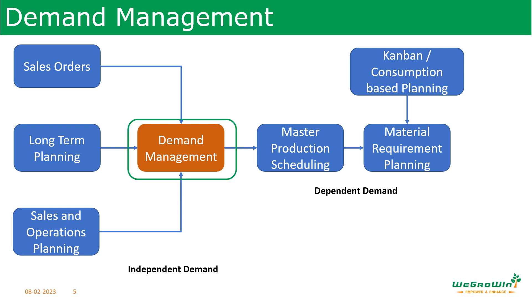Handling independent demand and dependent demand together is called demand management. As a purchasing person, you must be clear on what is independent demand and dependent demand. There may be demand not entered into the system — for example, frequently consumed materials where independent demand is not considered, or materials used by multiple departments whose requirements are not captured — causing conflicts. Ensure all dependent and independent requirements are captured so MRP runs correctly.